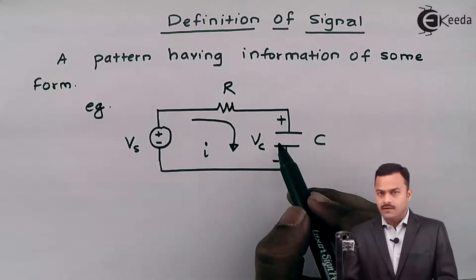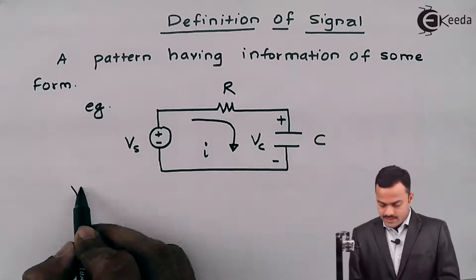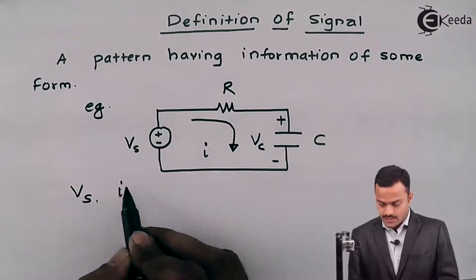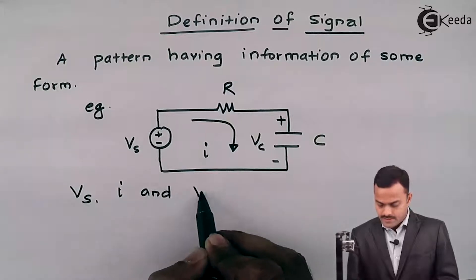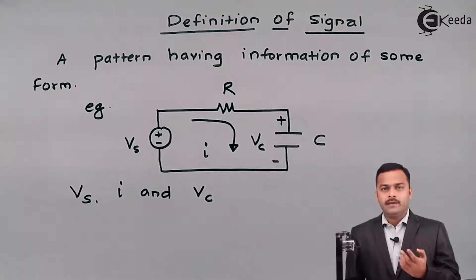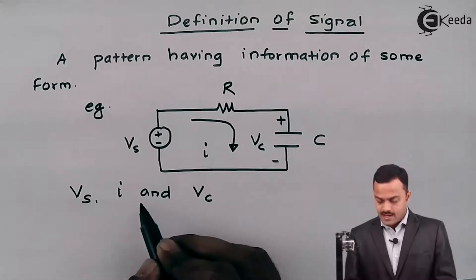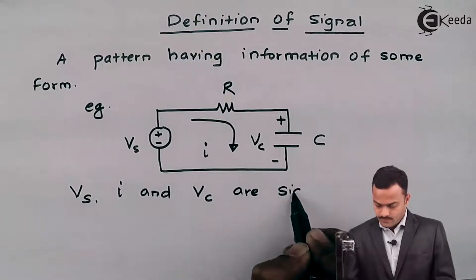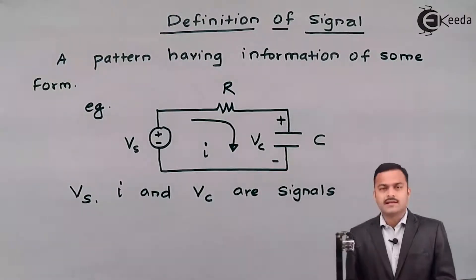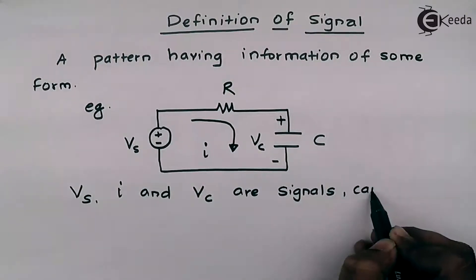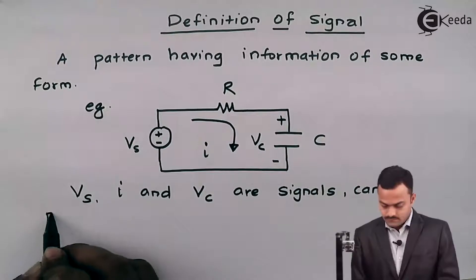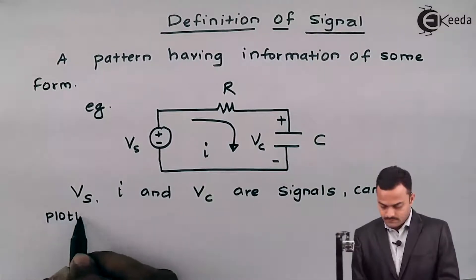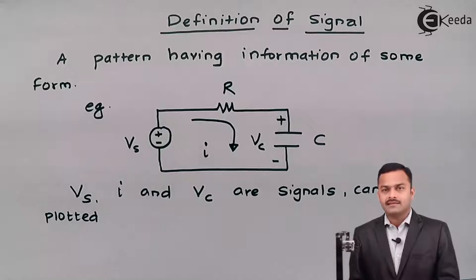So in this case Vs, I, and Vc can be shown or can be represented against the time t. So I can say Vs, I, and Vc are signals that can be plotted against time t.